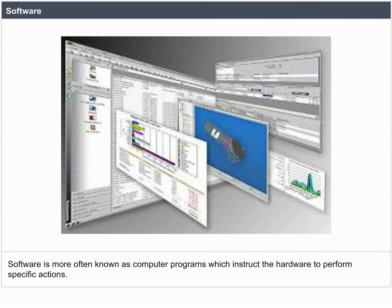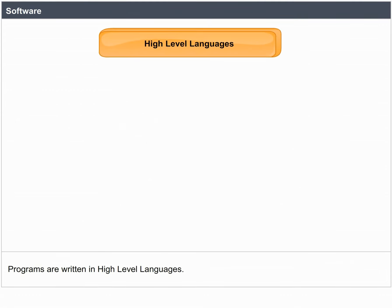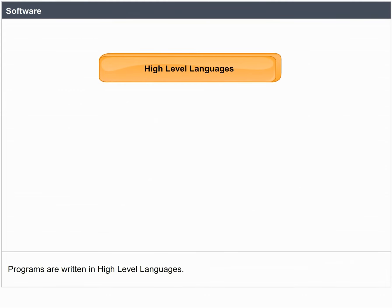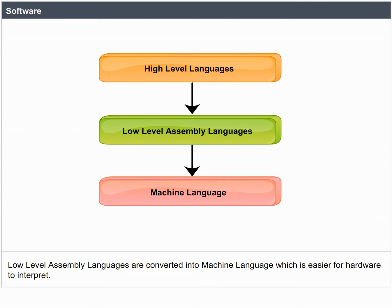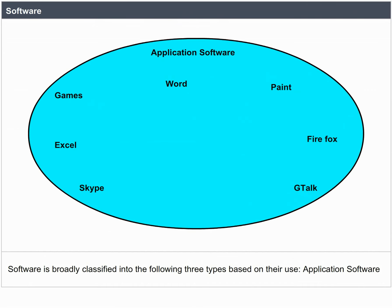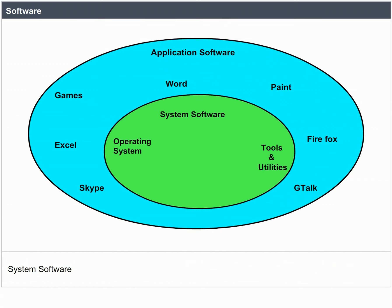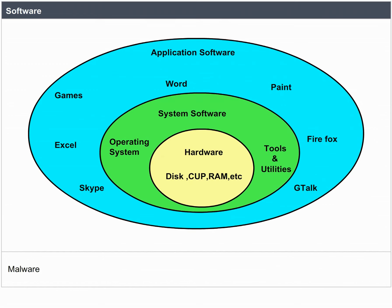Software. Software is more often known as computer programs which instruct the hardware to perform specific actions. Programs are written in high-level languages, which are converted into low-level assembly languages, and then into machine language which is easier for hardware to interpret. Software is broadly classified into three types: application software, system software, and malware.